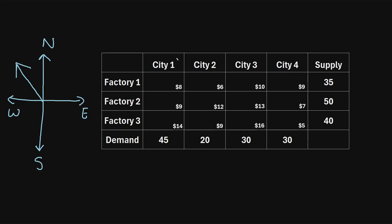City one has a total demand of 45 units, so we're going to fulfill as much of that demand as possible in this cell based on the supply for this factory. This factory has a supply of 35, so we can use up all 35 units. Once we've used up that 35, we cross it out because factory one no longer has any supply. We met 35 of the 45 demand, so the remaining demand becomes 10. Because there is still demand to meet, we move down one cell.